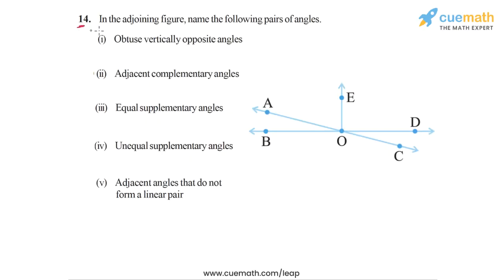In question 14, we have to look at the adjoining figure on the right side and find pairs of angles according to the conditions given in each part. For example, in part one we have to name a pair of obtuse vertically opposite angles, in part two a pair of adjacent complementary angles, and so on. Before we do that, let's analyze the figure.